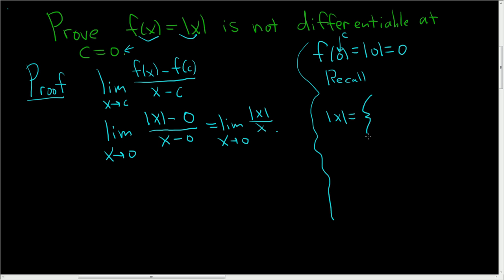It's just x if x is greater than or equal to 0, and it's negative x if x is less than 0. So we'll take one-sided limits.